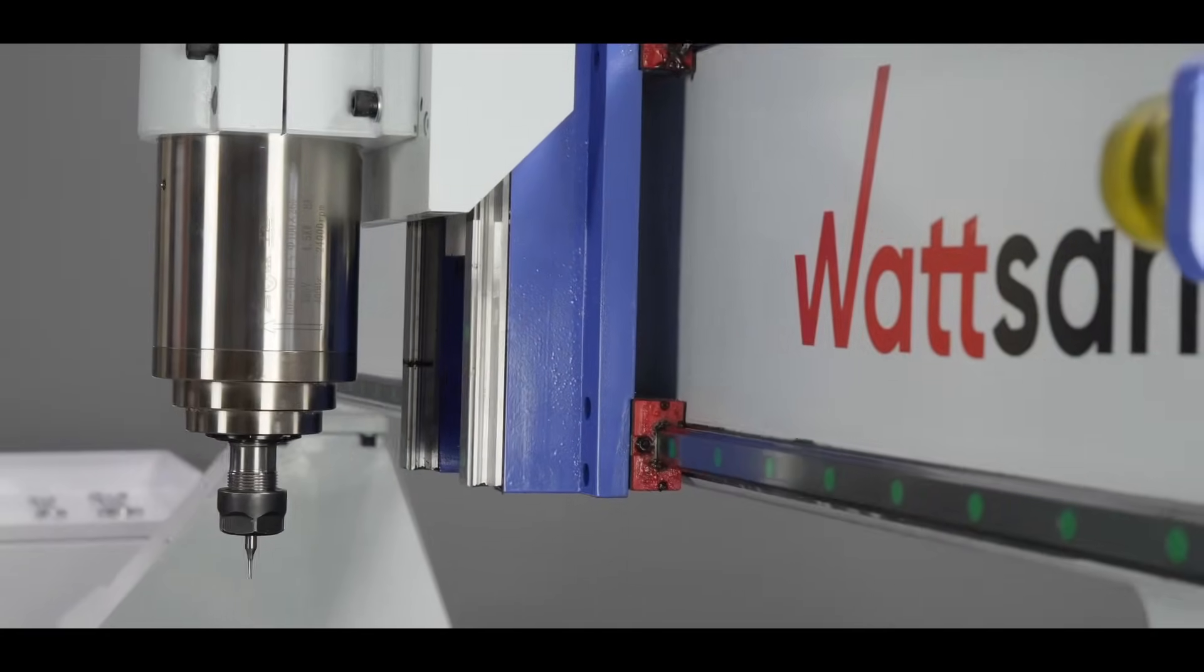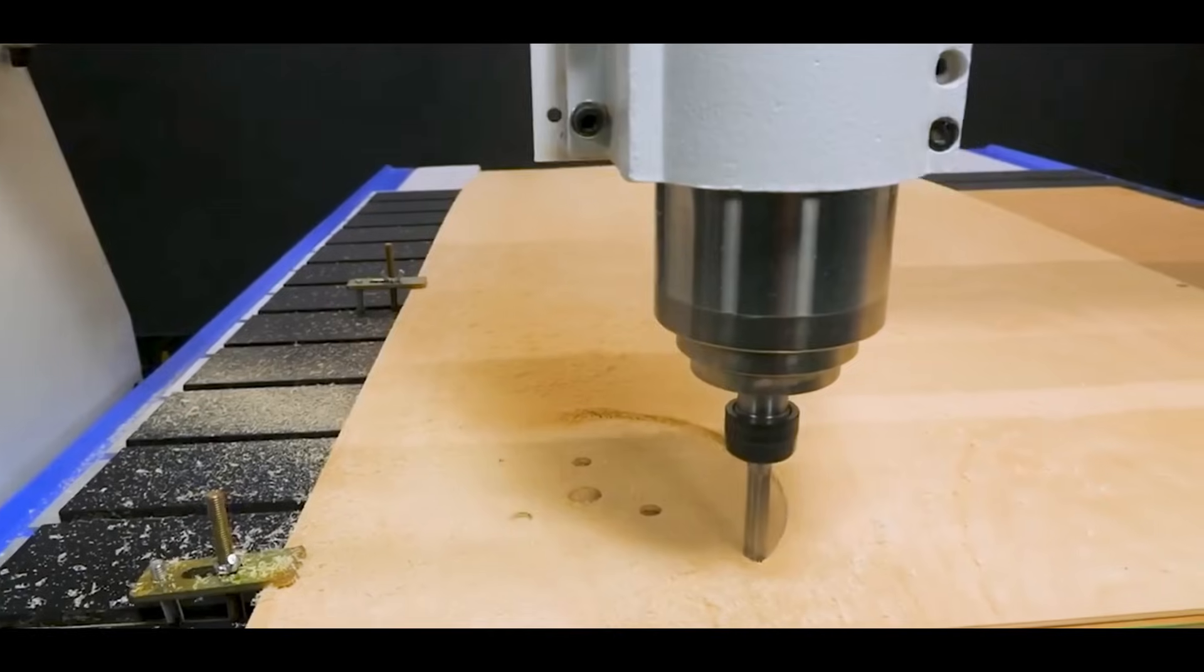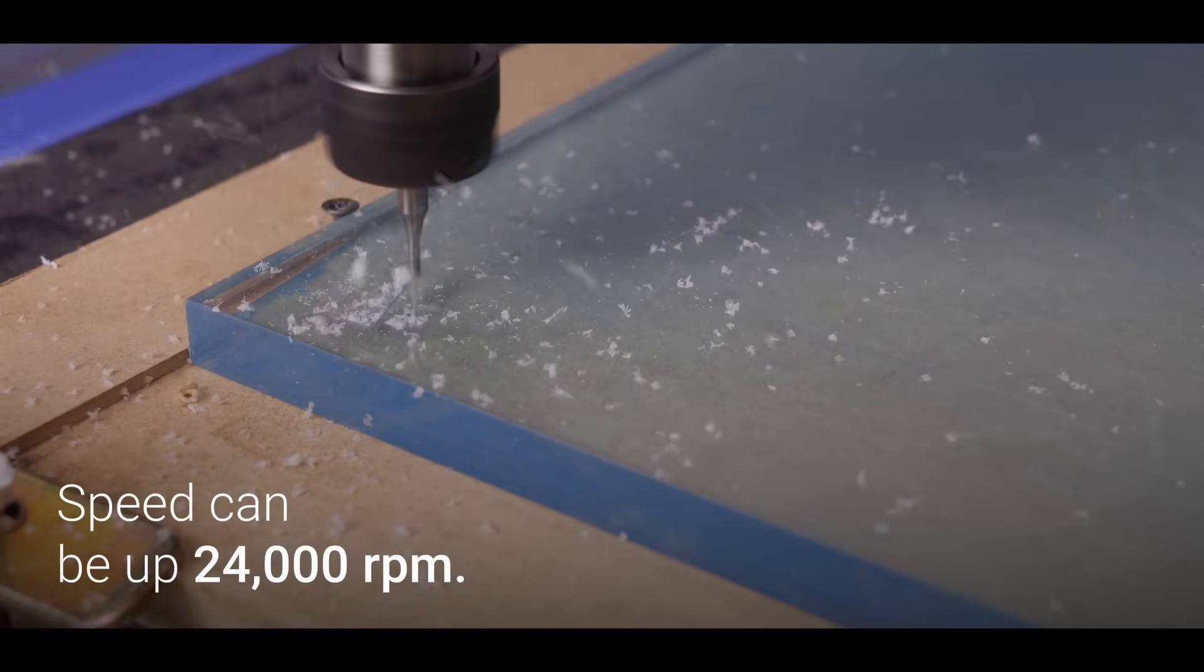M1 1313 is a 3-axis miller. It's equipped with a 3kW water-cooled spindle by default. Its speed can be up to 24,000 rpm.